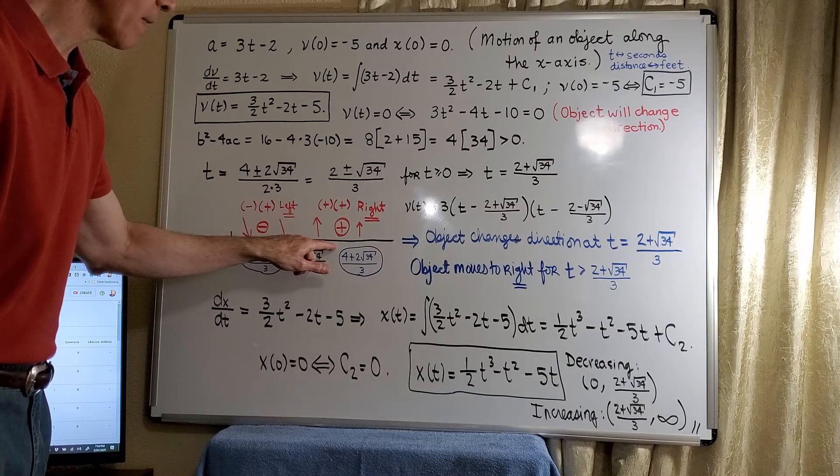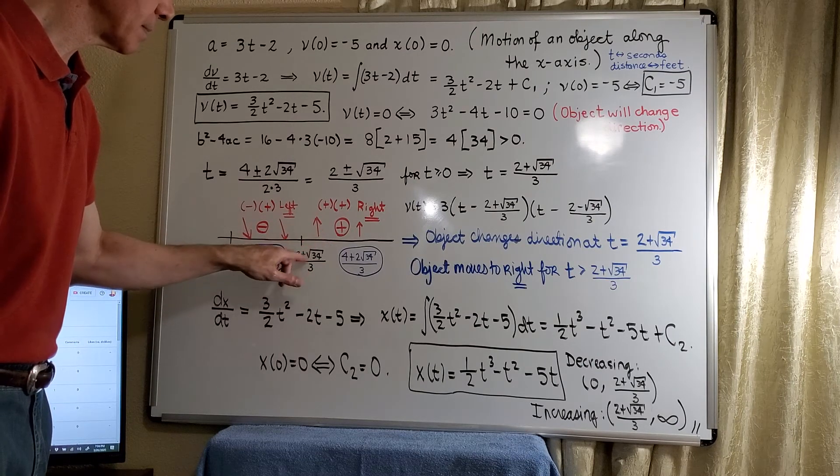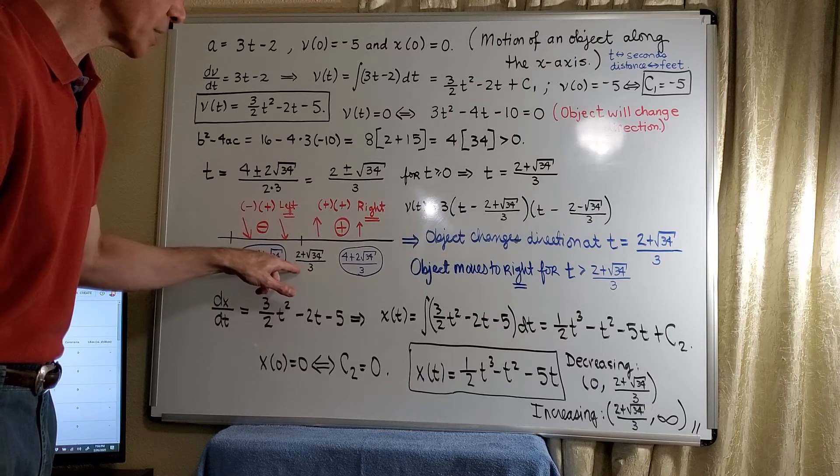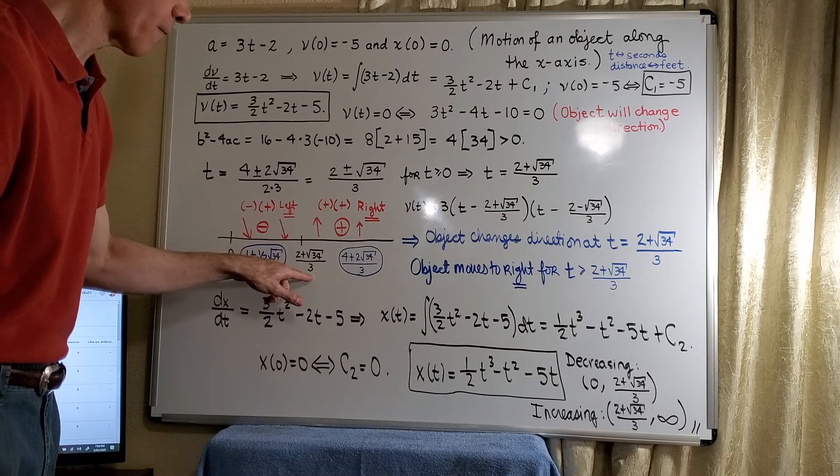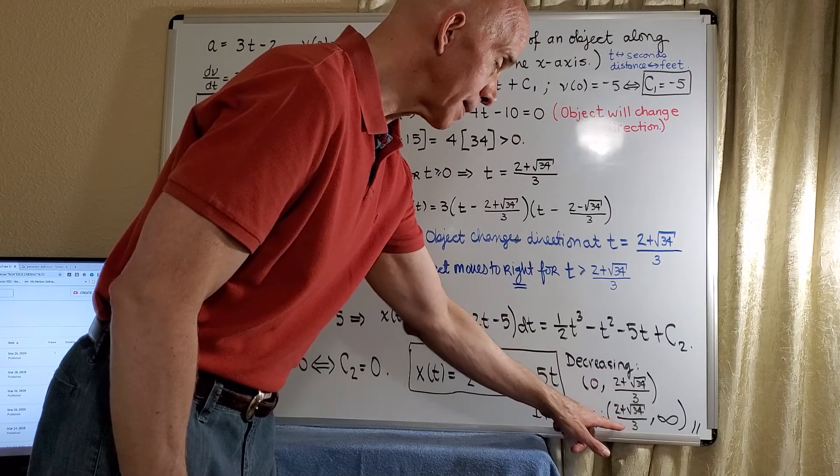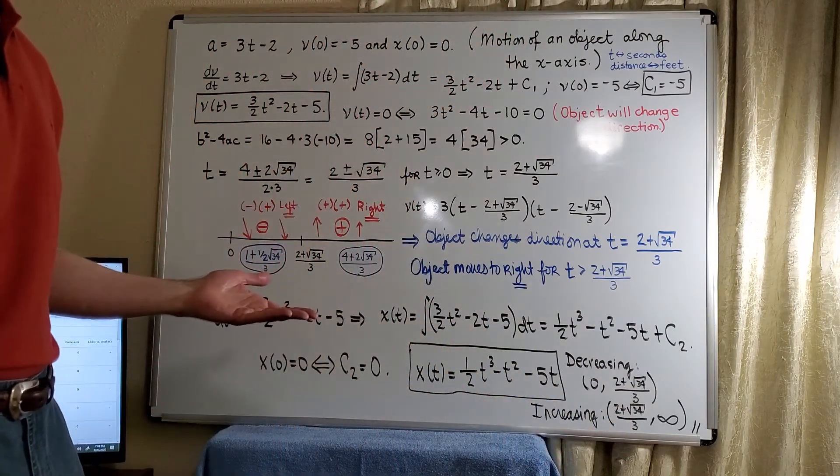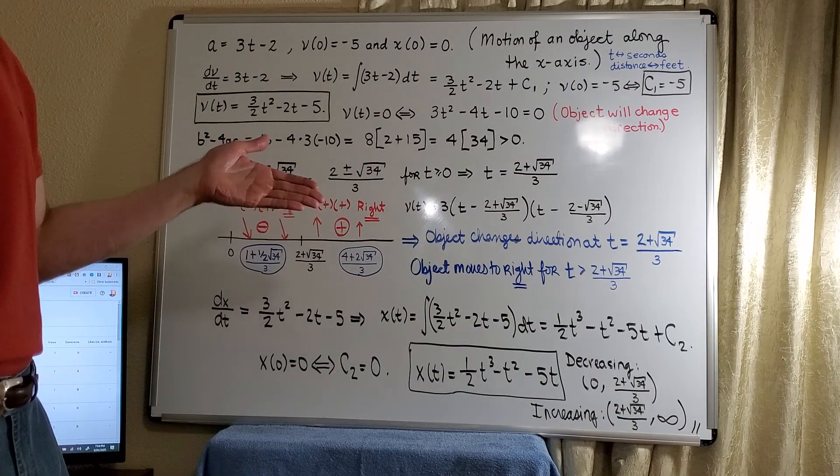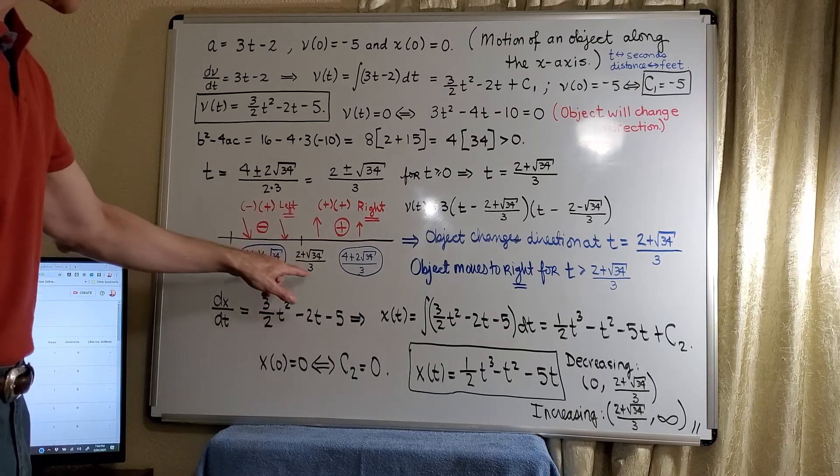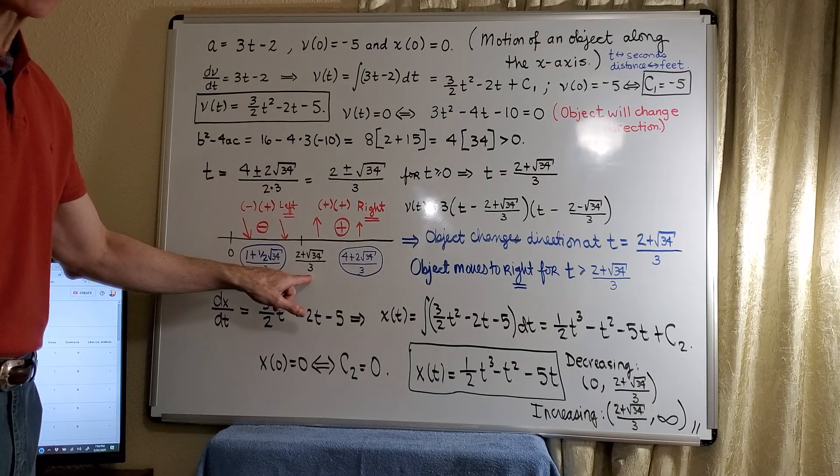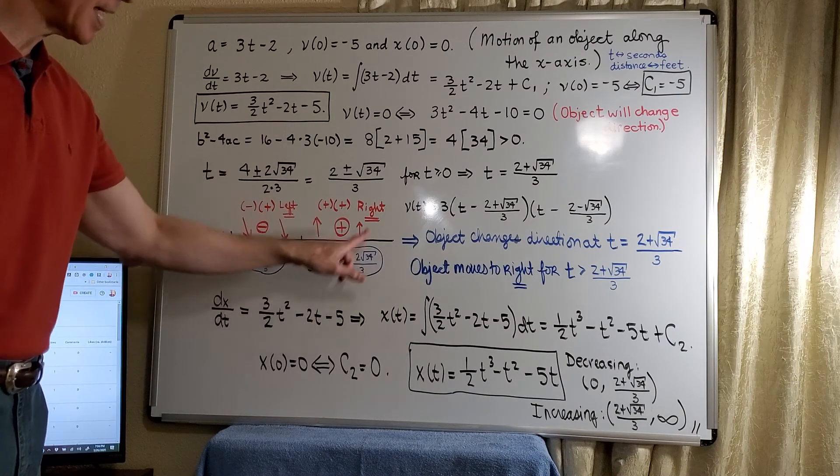And then here, for values of t larger than 2 plus root 34 over 3, we see that the function is increasing. So again, when you think about the cubic function, it's decreasing. And at this point here, you have a relative minimum, and then it increases again.